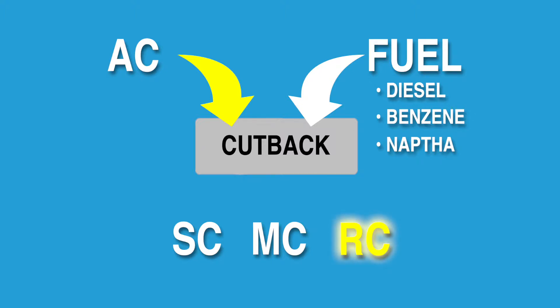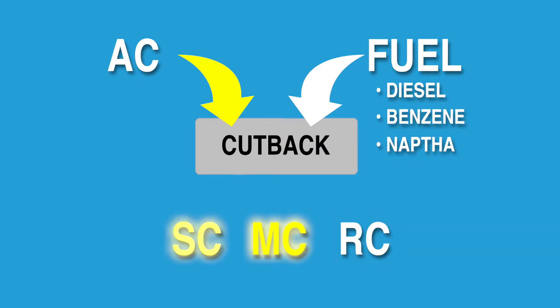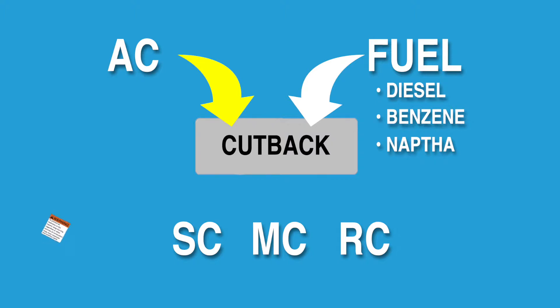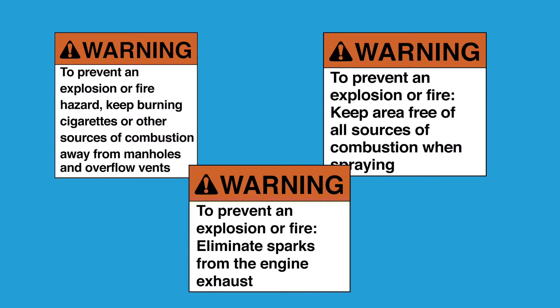RC stands for rapid curing, MC stands for medium curing, and SC stands for slow curing. Thus, RCs, being the most rapid curing, contain the lightest, most volatile solvents, while MCs and SCs contain solvents that take longer to evaporate. Fumes from the solvent can be explosive. It is therefore mandatory that no spark or open flame be allowed anywhere in the area where these products are in use. This includes smoking, use of cigarette lighters, or hand torches.